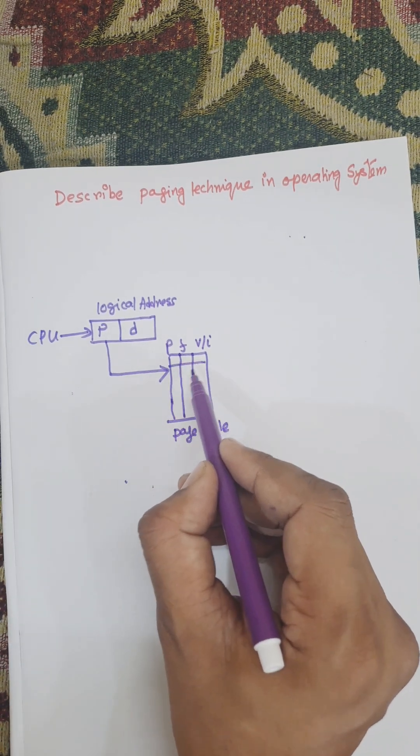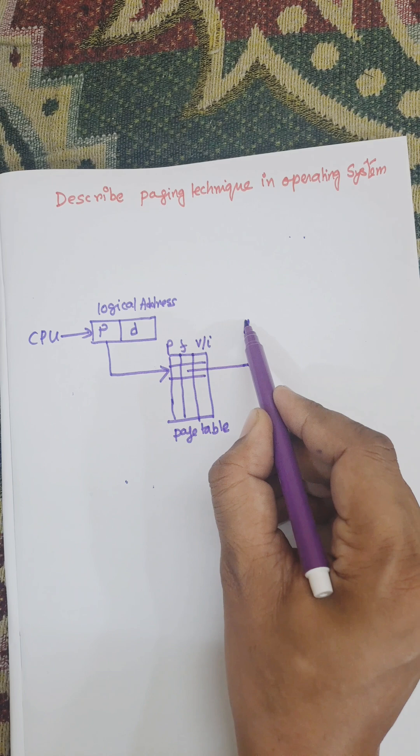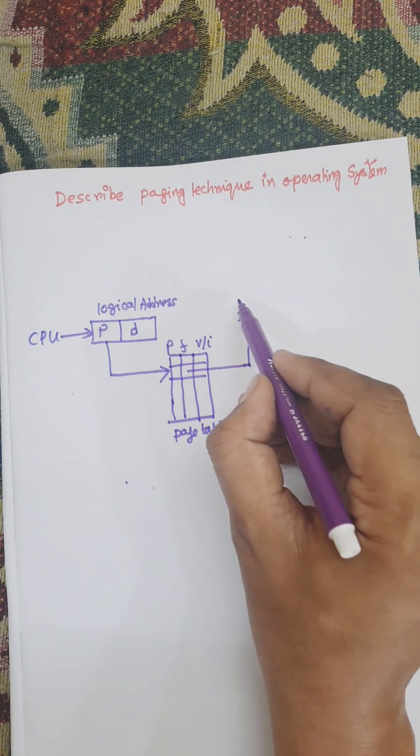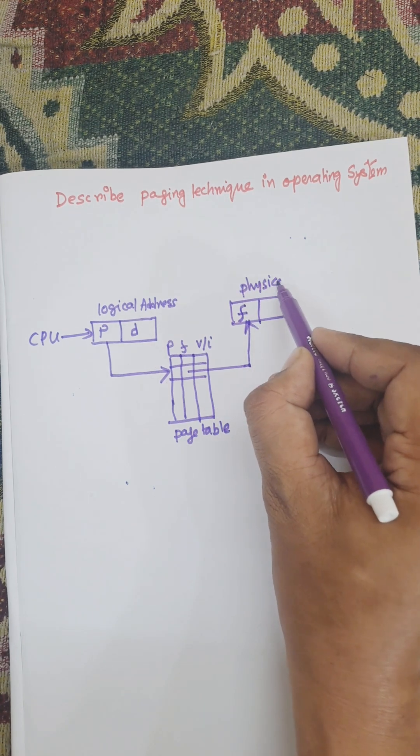If the page is found, then the corresponding frame needs to be transferred to the corresponding physical address F. And this is the physical address. The logical address is mapped to physical address.